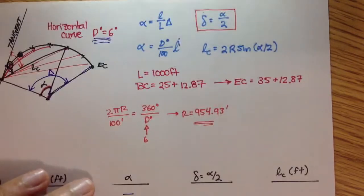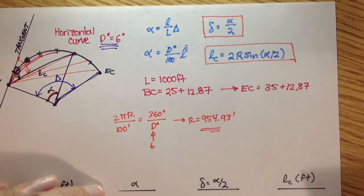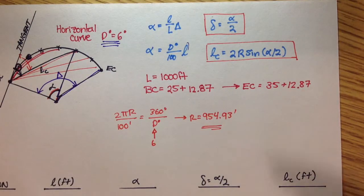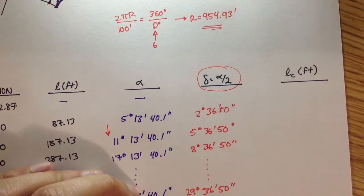So, LC. LC, again, we have a formula. LC is equal to 2 times the radius of the curve times the sine of alpha divided by 2. Now, alpha divided by 2 is actually the deflection angle.